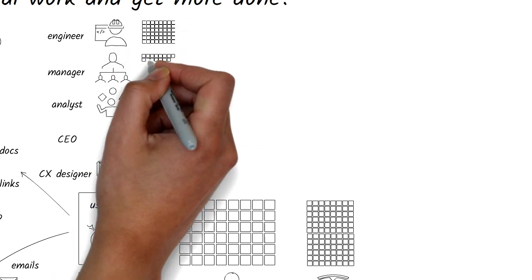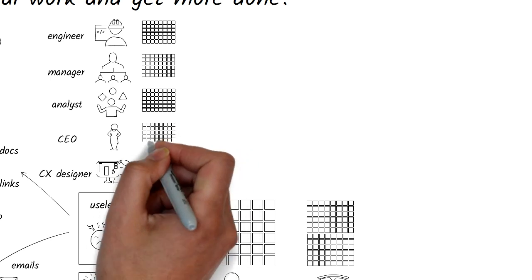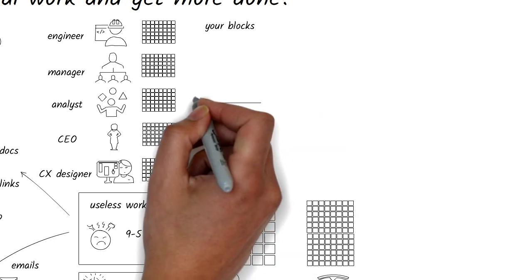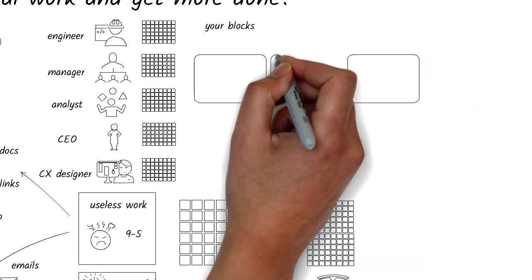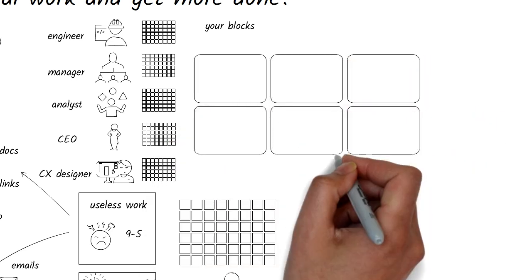Each role will have unique needs for breadth and depth of knowledge. If each hour of your work is a block, how should you arrange 40 blocks in your week to fulfill your responsibilities optimally? For any role, you should have no more than five topics of focus, and the fewer is even better because then your work is much more focused.